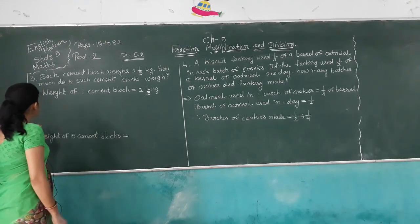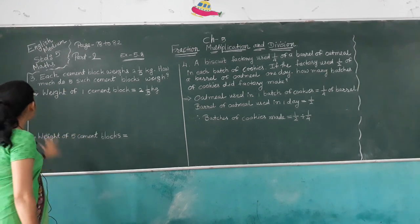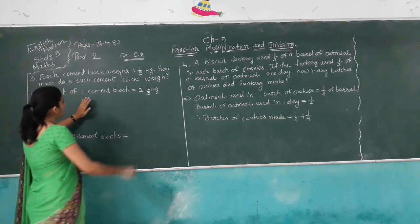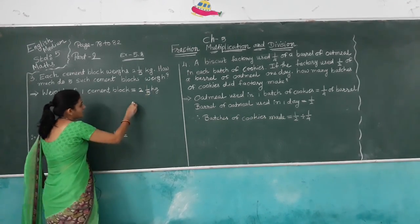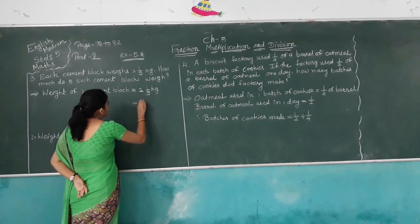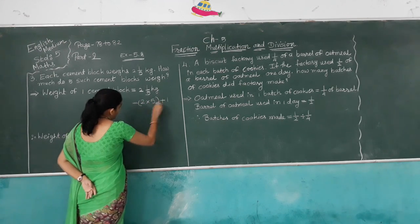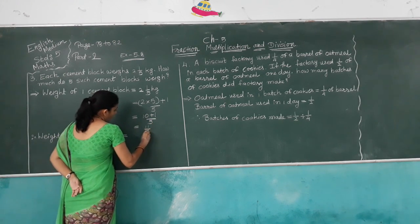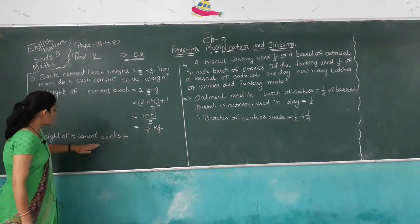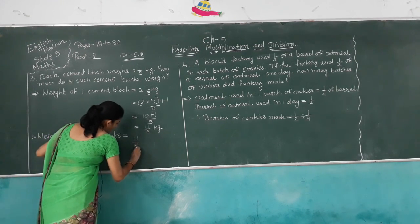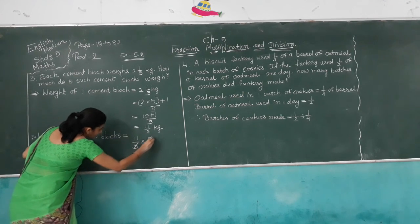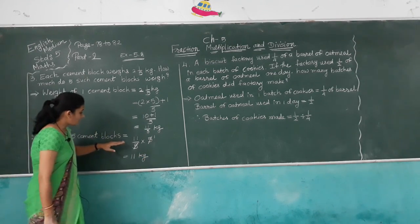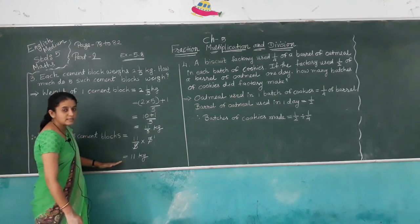Next: each cement block weighs 2 and 1/5 kg. How much do 5 such cement blocks weigh? Weight of 1 cement block = 2 and 1/5 kg. Converting to improper fraction: (2×5)+1 = 11/5 kg. Weight of 5 cement blocks = 11/5 × 5. The 5s cancel, giving 11 kg. So the weight of 5 cement blocks is 11 kg.